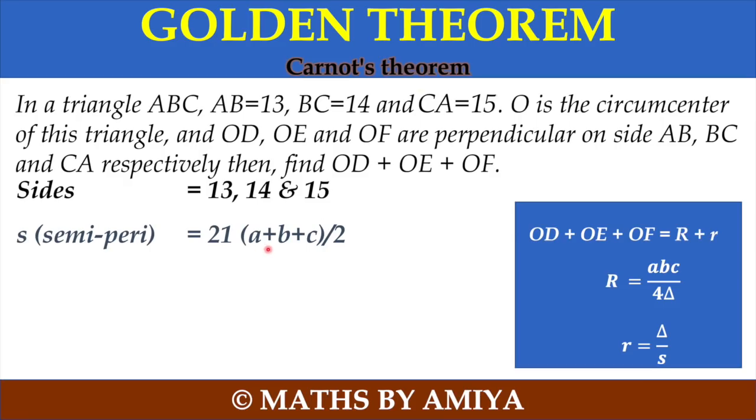Semi-perimeter which is nothing but A plus B plus C by 2, summation of sides by 2 is 21. We can easily find the area by Heron's formula, under root s into s minus A into s minus B into s minus C, which is nothing but 84 in this case.